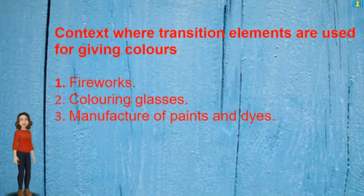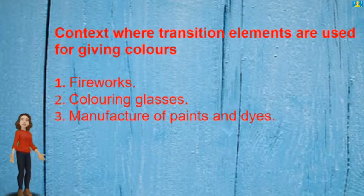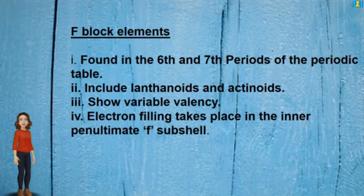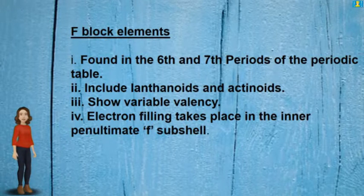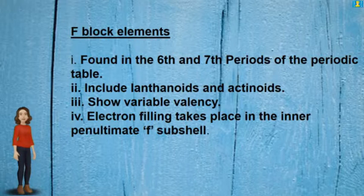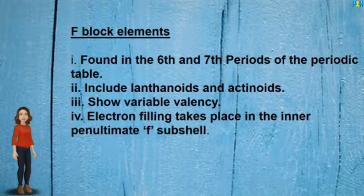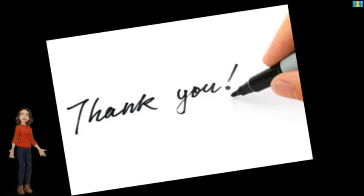Transition elements are used for giving colors in fireworks, coloring glass, and manufacture of paints and dyes. F block elements: found in the 6th and 7th periods of the periodic table. They include lanthanoids and actinoids, share variable valency, and electron filling takes place in the inner penultimate F subshell.